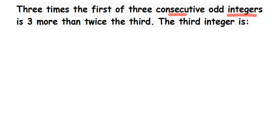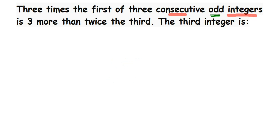What are consecutive integers? They are numbers which come one after the other. For example, 1, 2, and 3 are consecutive numbers — I'm not missing out any number, I've written them one after the other. For negative numbers, minus one, zero, and one are also consecutive because after minus one we have zero, and after zero we have one.